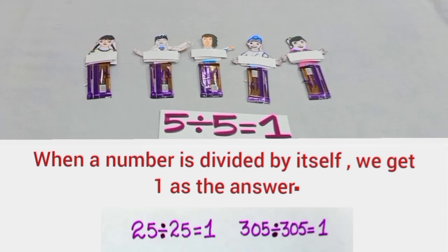So, whether it is a 2 digits number or 3 digits number, when a number is divided by itself, we get 1 as the answer.